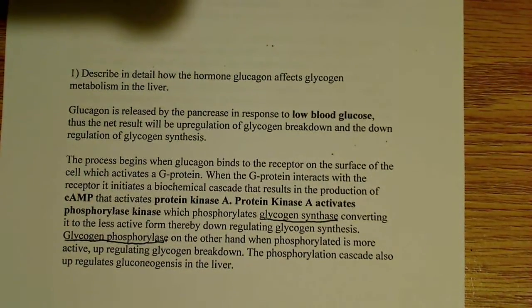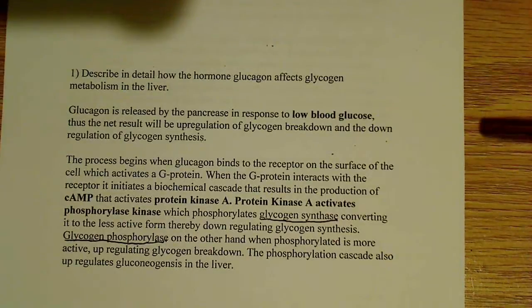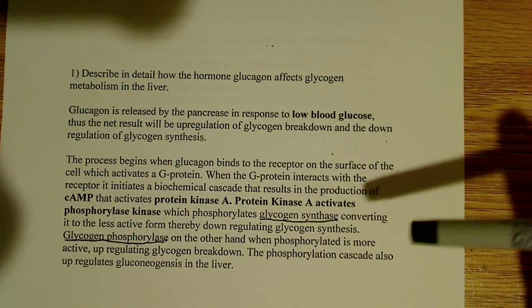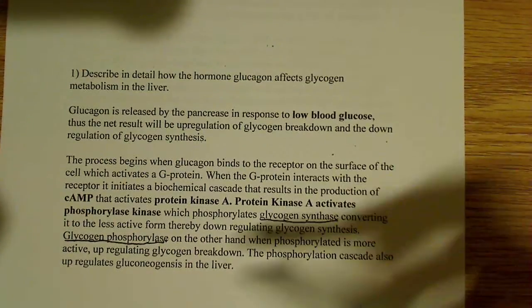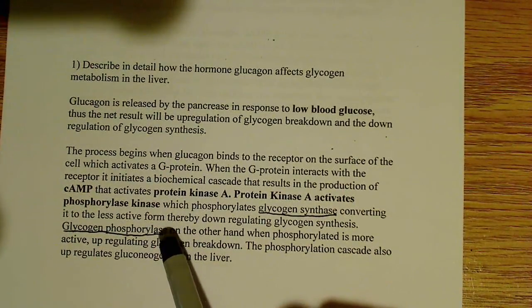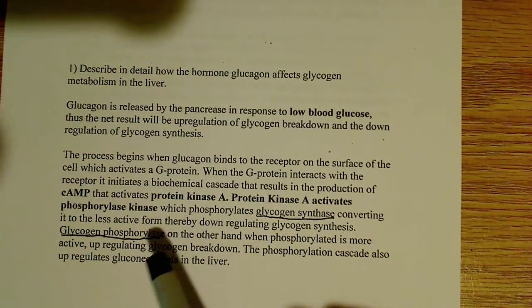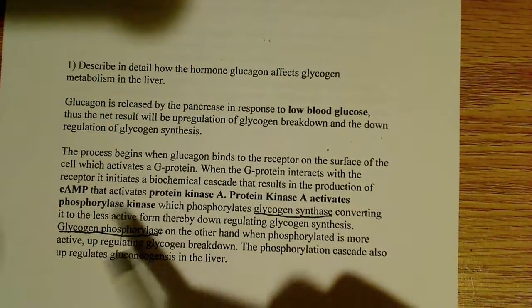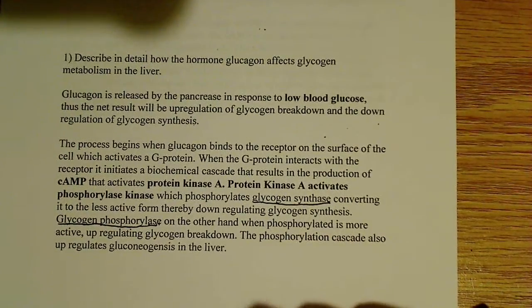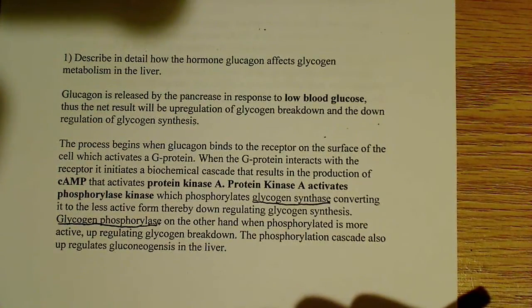One thing that's really interesting is we have reciprocal regulation — I've talked about this in some of my other videos. When we phosphorylate glycogen synthase, it's in its less active form. But at the same time, phosphorylating glycogen phosphorylase actually activates it. So you can see it has a reciprocal effect: in one case we're activating, and in another case we're deactivating, with the same molecule. It saves energy and makes sense for the cell.